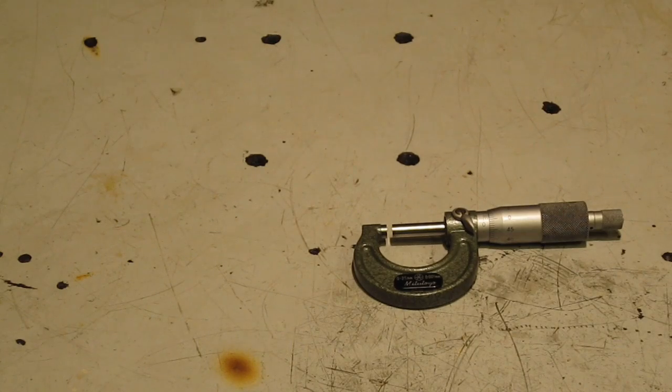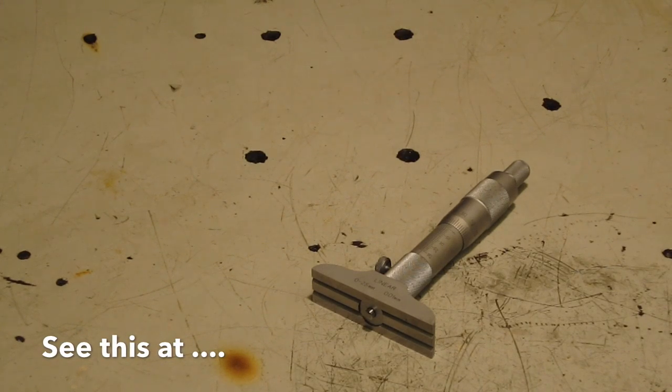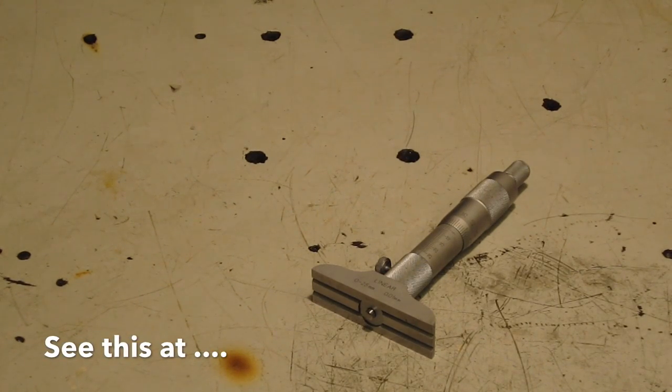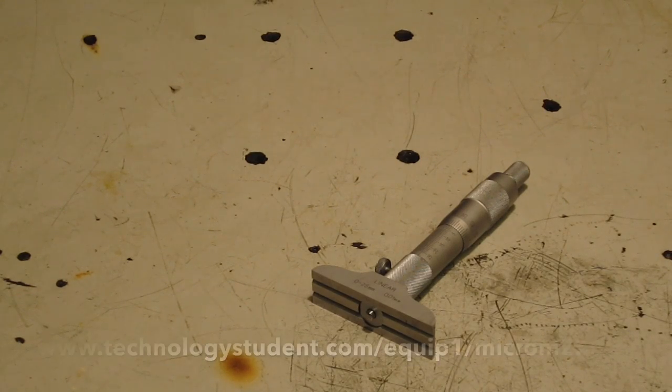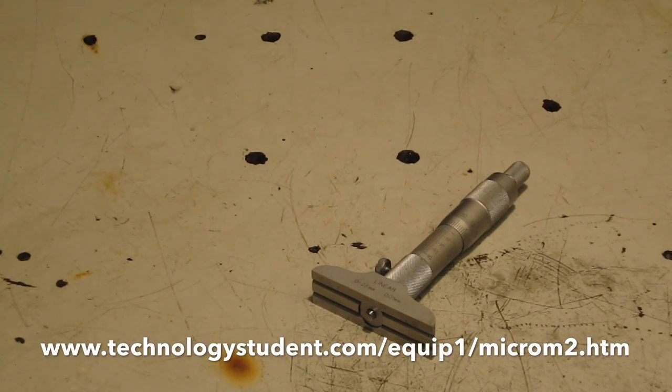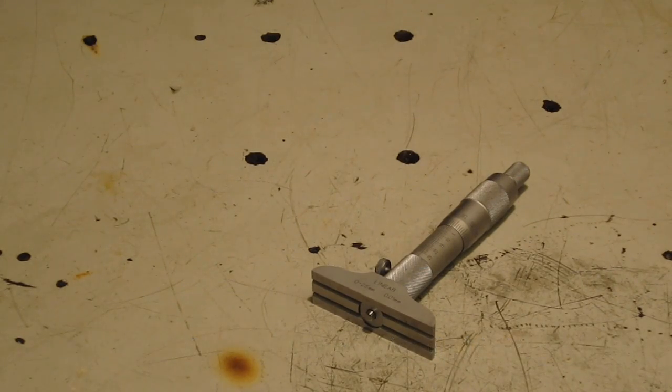The other thing you're going to need is a depth gauge micrometer for taking various measurements on the gearbox to establish how much shimming you need to do. You'll see this in action, as you will with all the other tools.